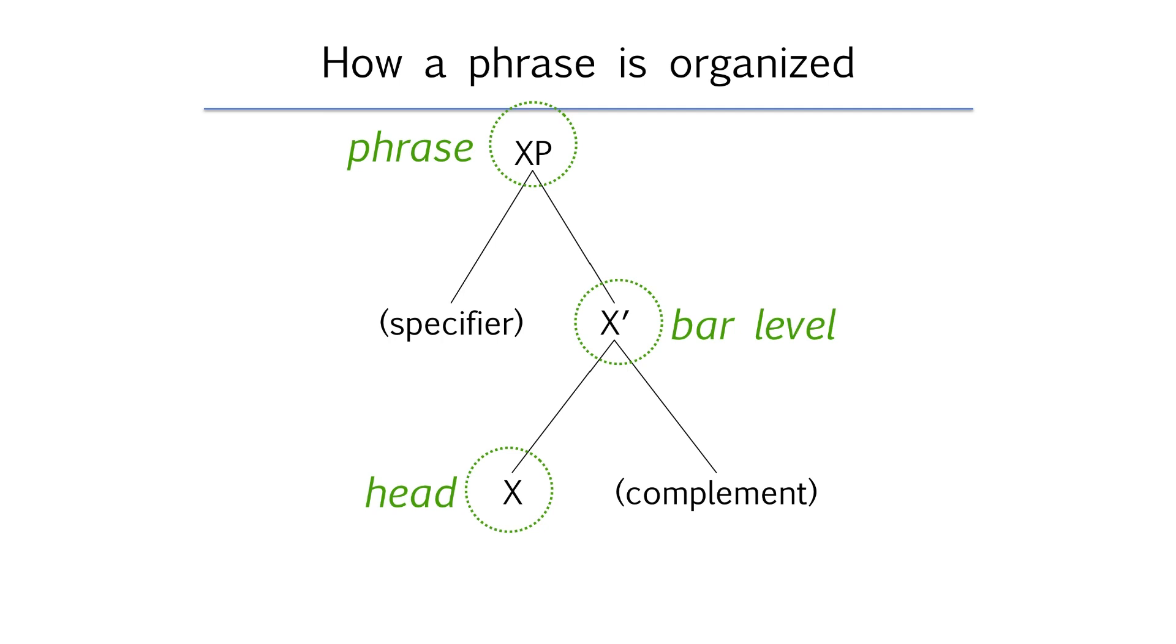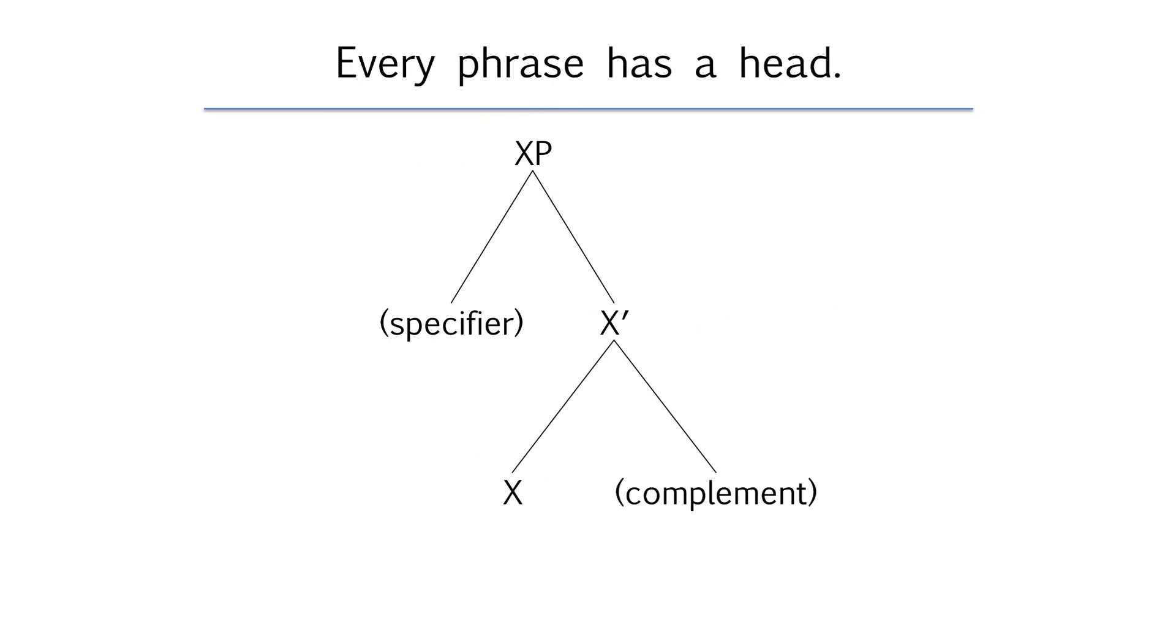So if every phrase in every sentence in every language has this structure then it must be the case that every phrase has a head. But you'll notice in this diagram that these other two pieces the specifier and the complement which we haven't yet talked about are in parentheses. That's to show that they're optional. They might not necessarily be in every phrase.